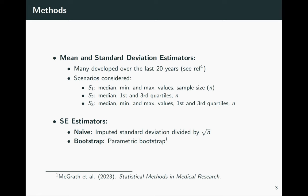There have been a number of methods developed in the literature over the last 20 years, with particularly growing activity over the last five years on these mean and standard deviation estimators. Almost all of these approaches consider that a primary study will report one of three sets of summary statistics: the median with minimum and maximum values, the median with first and third quartiles, or the median with both — as well as the sample size. These are noted as scenarios one, two, and three.